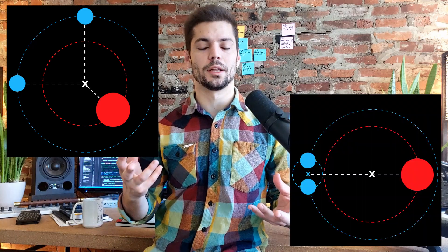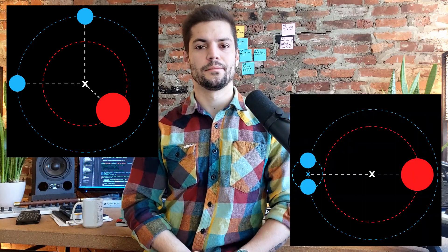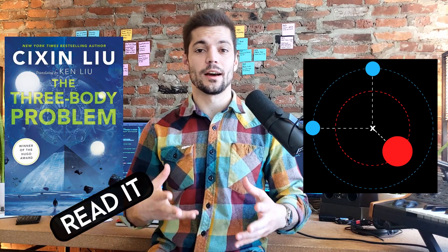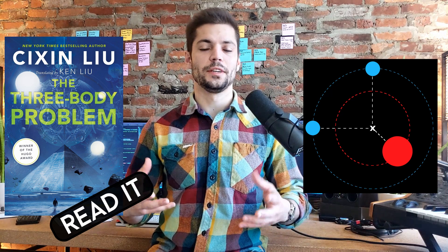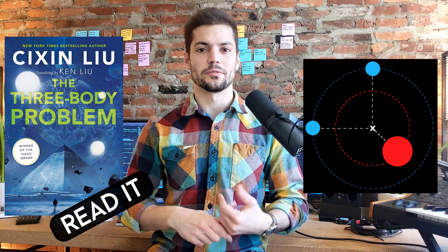When we add a third star to the solar system, that's when things start to get interesting. At this point, the solar system will either become a multiplex or a simplex system. In a multiplex system, all of the stars orbit around their shared center of mass. These systems tend to be extremely chaotic and unstable, as all of the stars are moving, so is their center of mass.